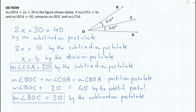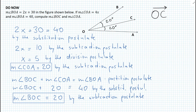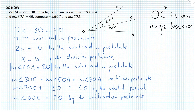Notice that, according to our answer — and you can see it also in the diagram — both angles, angle BOC and angle COA, are both 20 degrees. So what does that tell us? Basically, what is the function of ray OC? It turns out that since we have two equal angles being split by ray OC, OC is called an angle bisector. And hence, the introduction to today's lesson of angle bisectors.